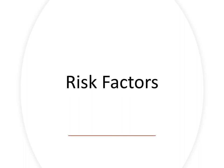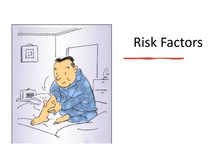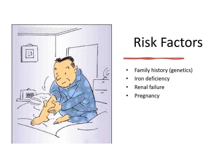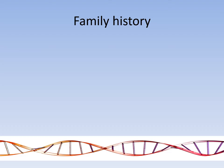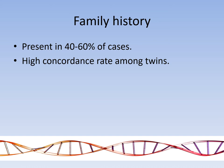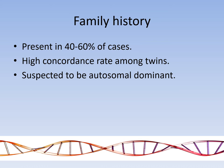Several risk factors are associated with the development of restless leg syndrome: genetics, iron deficiency, renal failure, pregnancy, neuropathy, and other neurologic conditions. Family history is present in 40 to 60% of cases, and there's a high concordance rate among twins. The genetic pattern of inheritance is suspected to be autosomal dominant, though it could be autosomal recessive with a very high carrier rate. No specific gene mutation has been identified to date.